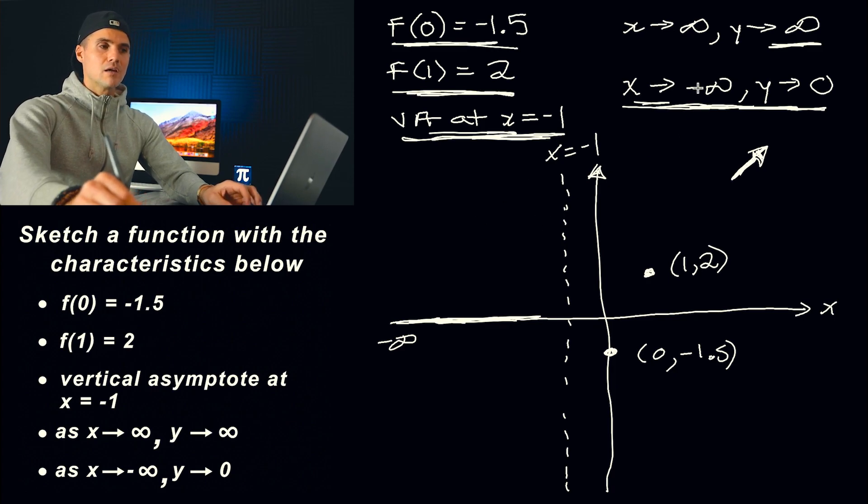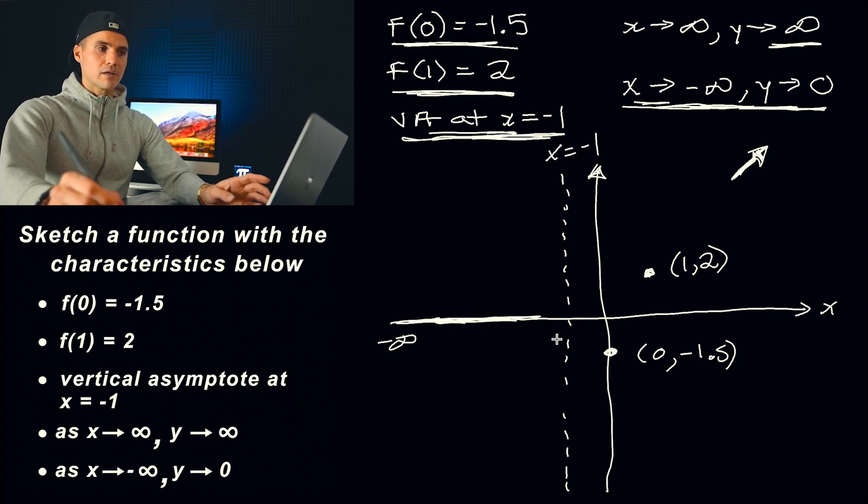And so that's what I mean by some characteristics give you more flexibility with how you could draw them. The points, there's no flexibility there. Vertical asymptote at x = -1, no real flexibility there. Those are concrete characteristics. These other characteristics, there is more subjectivity.